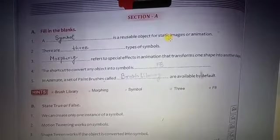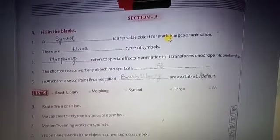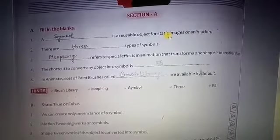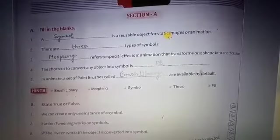The shortcut to convert any object into symbol: F8 key. By using the F8 key, we can convert into a symbol whatever object, like a drawing, you display onto the stage. It can be converted by using the F8 key.